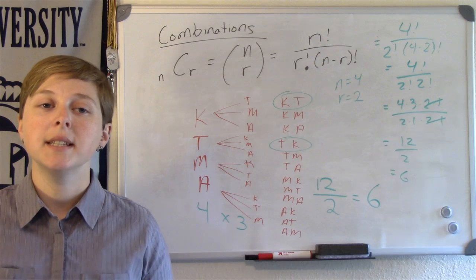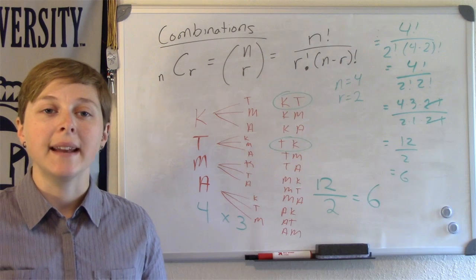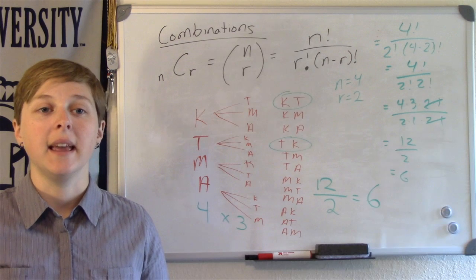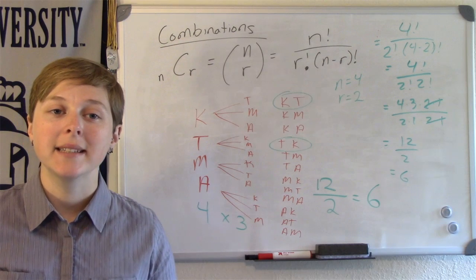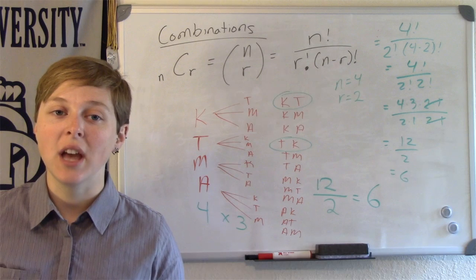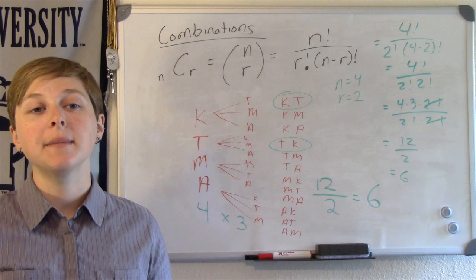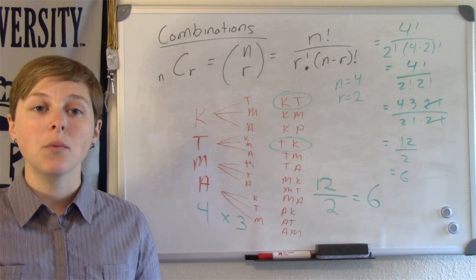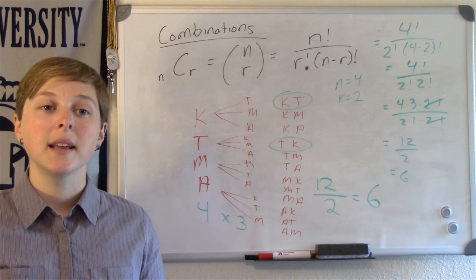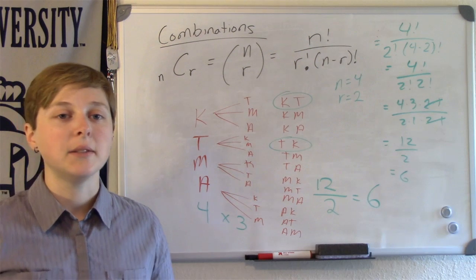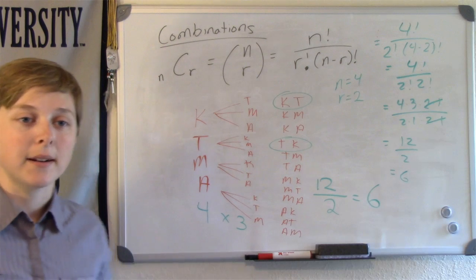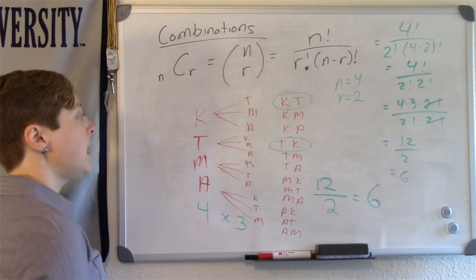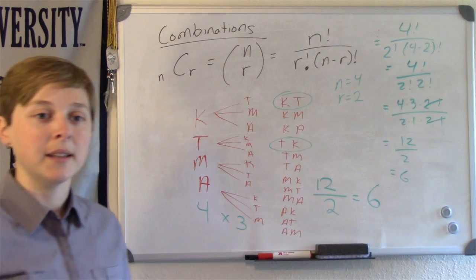Now let's increase the difficulty of this problem by adding two more friends. I have 6 friends: Kim, Tina, Max, Alex, Simon, and Jeff. Only 3 friends can be set as my favorites in my phone. How many different ways can the 3 friends be selected as favorites, assuming that order does not matter? A tree diagram may be helpful to illustrate all the different possibilities.